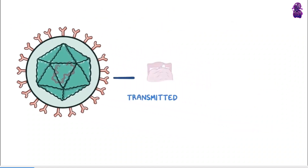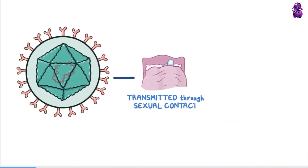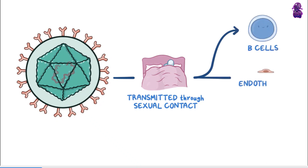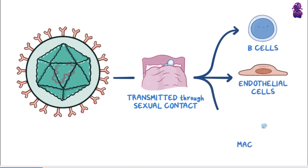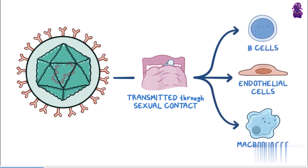HHV-8 is transmitted through sexual contact, and once in the body, it uses the viral glycoproteins on its envelope to enter a wide variety of cells, such as B cells, endothelial cells, macrophages, and epithelial cells.